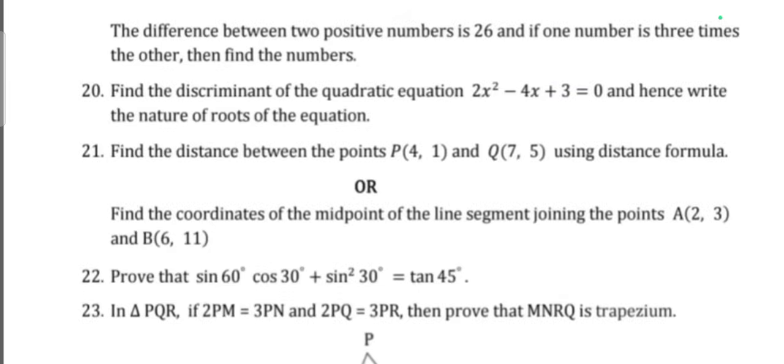Next question: The difference between two positive numbers is 26, and if one number is three times the other, then find the numbers. Find the discriminant of the quadratic equation 2x square minus 4x plus 3 is equal to 0, and hence determine the nature of the roots. Question 21: Find the distance between the point P of 4, 1 and Q of 7, 5 using the distance formula, or find the coordinates of the midpoint of the line segment joining points A of 2, 3 and B of 6, 11. Question 22: Prove that sine 60 degree cos 30 degree plus sine square 30 degree is equal to tan 45 degree.